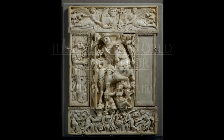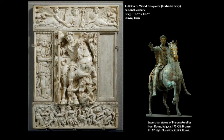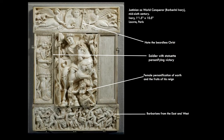Another work showing Justinian as propaganda is Justinian as World Conqueror — an ivory carving approximately 10 inches in height. You can see him riding at the center on a horse, very much like the sculpture of Marcus Aurelius. Above is the image of Christ, again beardless. The soldier at the left personifies victory. The woman underneath the horse personifies the earth, almost as if she's being trampled. Below are barbarians attacking Italy from east and west, and it looks as if he's trampling them as well — though in reality they have the upper hand and are slowly taking over Italy.